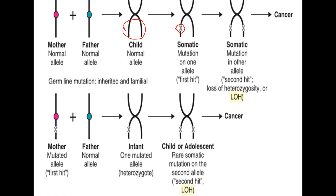This is the first hit. During the course of time, the other allele also acquires another mutation, giving two mutations total — this is called the second hit. This is the loss of heterozygosity, and that results in the development of cancer. The former condition occurs in the sporadic forms of cancer.